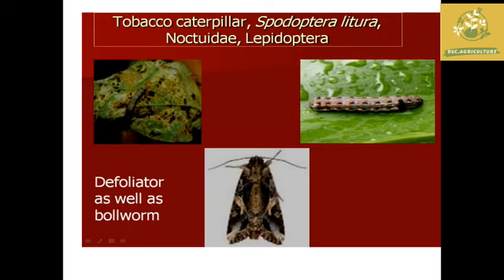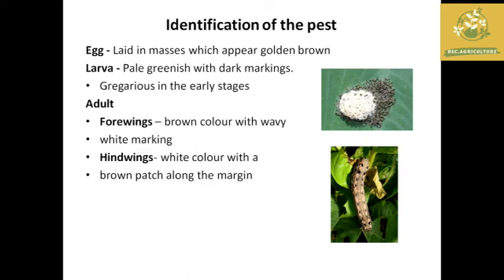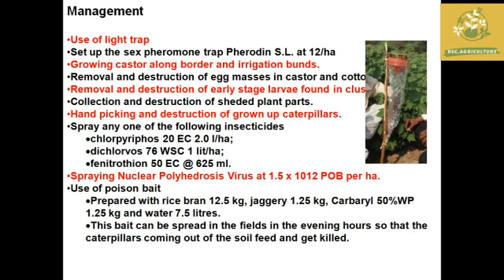We spray to control this leaf folder. Next is Tobacco Caterpillar, also known as army worm or leaf worm. This is an important pest in cotton. Symptoms include whole plant defoliation. Large irregular holes appear in leaves along with fecal pellets.